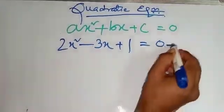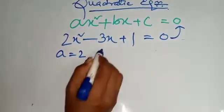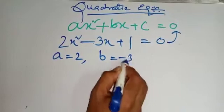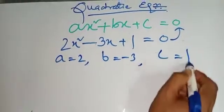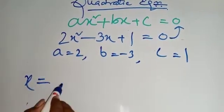This equation compare with this, I will get a equal to 2, b equal to minus 3, c equal to 1. Now, apply Sridhar Acharya formula.